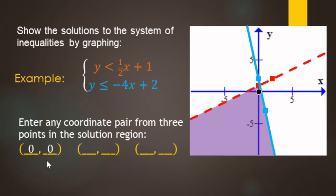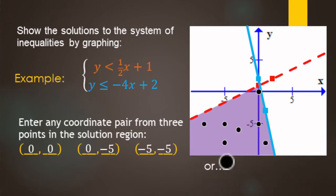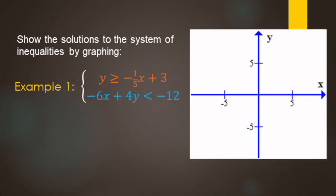Any ordered pair in this purple region works as a solution. For example: (0, 0), (0, -5), or (-5, -5). We can also choose any other ordered pair in this purple region. We can choose points on the solid blue line but not on the dashed red line, because those are not solutions.